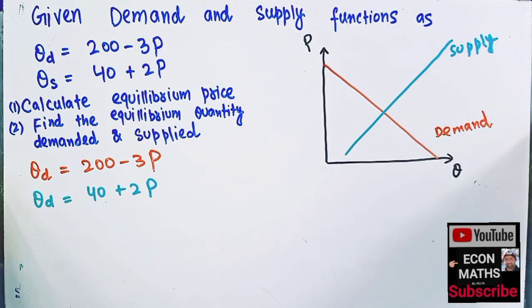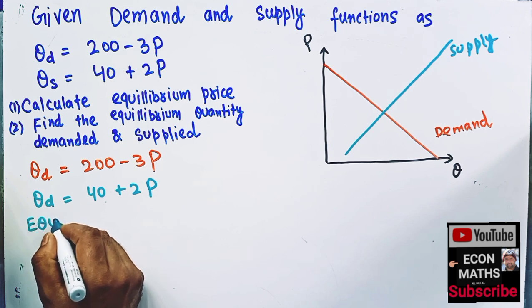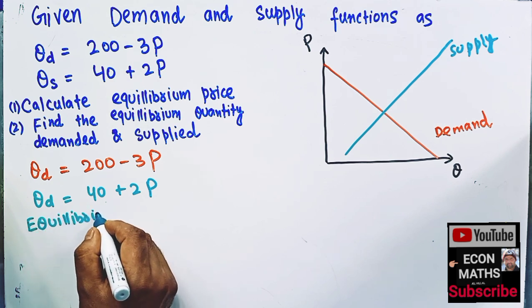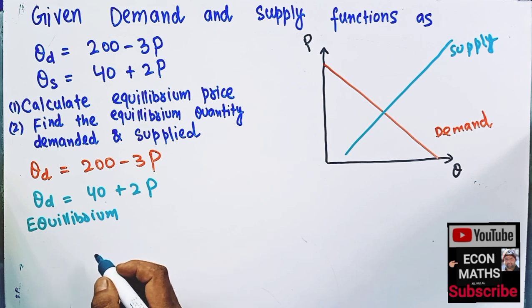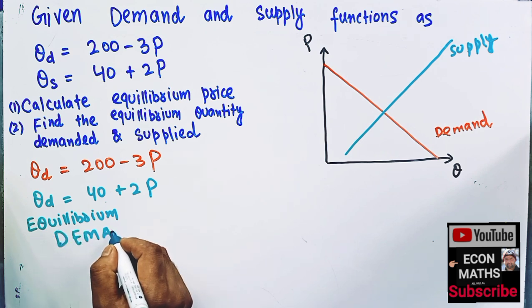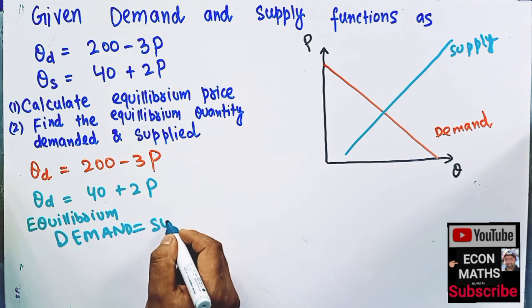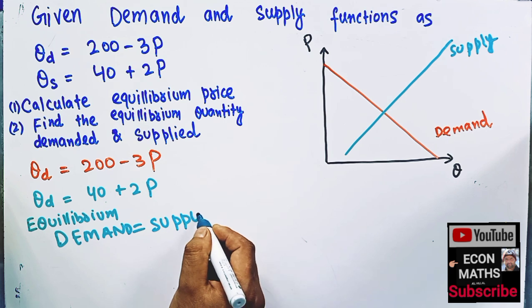Supply. We know that equilibrium occurs. Equilibrium requires that demand should be equal to supply.